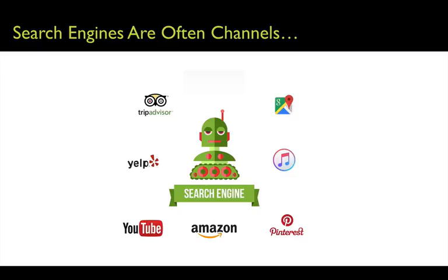As we talked about earlier, there are lots of different kinds of search engines. Most people think search engine equals Google, and Google has the majority of all search — they've cornered the market. But the truth is that all of these different vertical search engines like TripAdvisor, Yelp, YouTube, Amazon, Pinterest, iTunes, and Google Maps or Google My Business are often much more lucrative and less competitive search engines. And the interesting thing is that these search engines are often the channel itself.